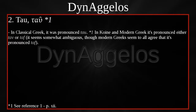TAU — in classical Greek it was pronounced TAU. In Koine and modern Greek it's pronounced either TAV or TAF. It seems somewhat ambiguous, though modern Greeks seem to all agree that it's pronounced TAV. The reason why this is ambiguous is because it's extremely rare for the digraph ALPHA-UPSILON to come at the end of a word. The digraph ALPHA-UPSILON can either make an AV sound or an AF sound depending on which letter comes after it. So when we see the letter TAU with no words following it, it's hard to know whether to pronounce it TAV or TAF.